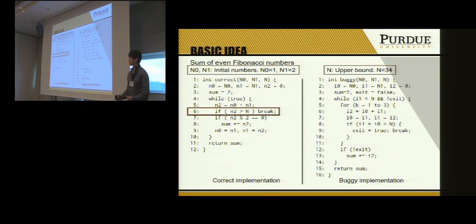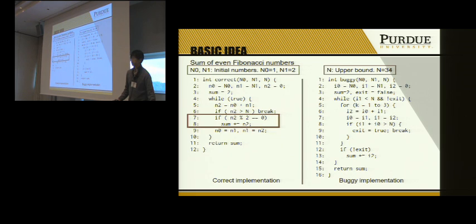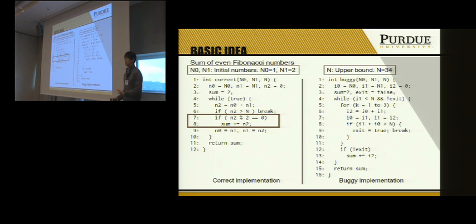In the correct implementation, line five computes the next Fibonacci number, line six stops the program if it exceeds the maximum upper bound, and line seven checks if the number is even and if so adds it to the sum.